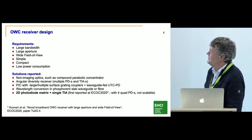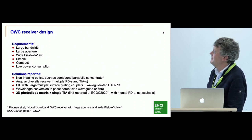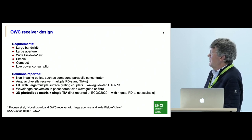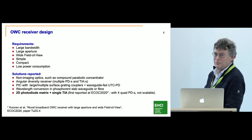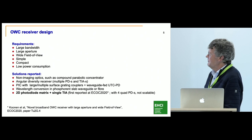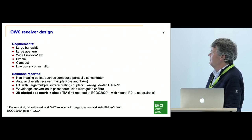A key in this system is the receiver — the optical wireless communication receiver, which has a lot of requirements. It needs to have large bandwidth, a large aperture to catch as much as possible of the beam, a wide field of view to avoid careful alignment at the user side, it should be simple, compact, and have low power consumption, because it typically is at the receiver side where the user has battery-operated equipment. Several solutions have been reported in the past — compound parabola concentrators, angular diversity receivers where you have multiple photodiodes followed by individual amplifiers, and surface grating couplers combined with a power combiner into a single waveguide going to a single photodiode, a concept introduced at OFC 2017. Wavelength conversion is also done by the group of Dominic O'Brien at Oxford University.